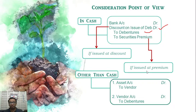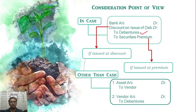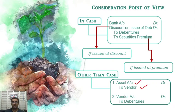For the premium: Bank account Dr., to Debentures, to Securities Premium account. The consideration for cash entries are as follows: if you have cash, you can purchase debentures — Debentures account Dr., to Debentures.